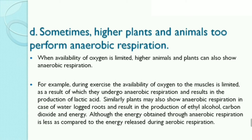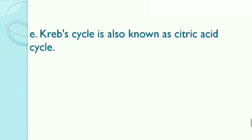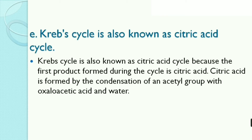Although the energy obtained through anaerobic respiration is less compared to aerobic respiration. Fifth, Krebs cycle is also known as citric acid cycle because the first product formed during the cycle is citric acid. Citric acid is formed by the condensation of an acetyl group with oxaloacetic acid and water.